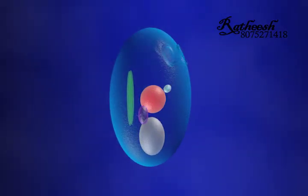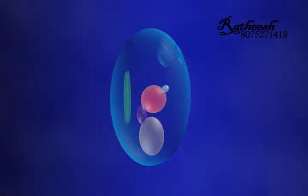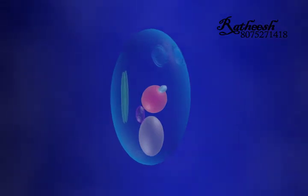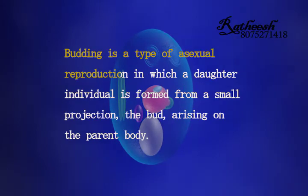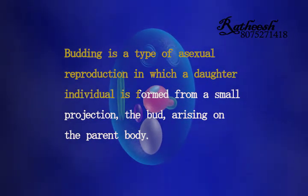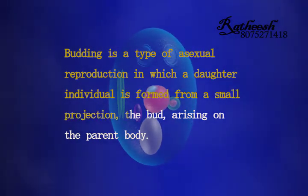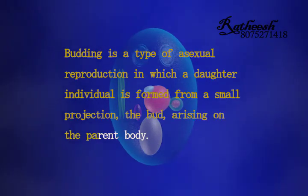Yeast is a unicellular fungus which reproduces asexually by an unequal division process called budding. Budding is a type of asexual reproduction in which a daughter individual is formed from a small projection, the bud, arising on the parent body.